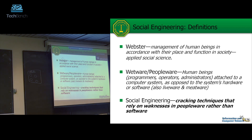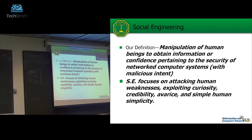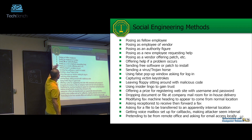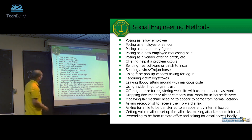The last part is social engineering. Everybody knows what social engineering is. It refers to hacking techniques that rely on weaknesses in people rather than software. Indicators of social engineering include: posing as a fellow employee, posing as an employee of a vendor, sending a virus, or sending free software or a patch to install. These are techniques used in social engineering attacks.